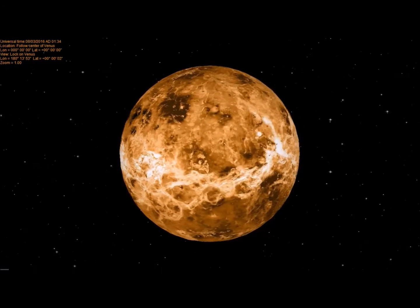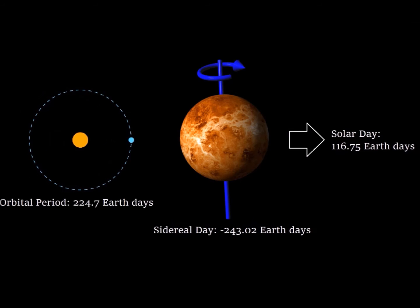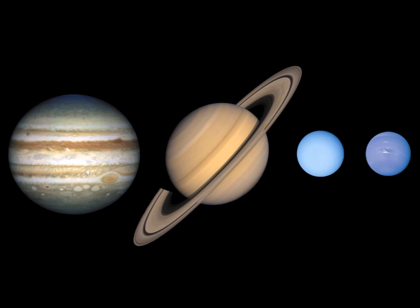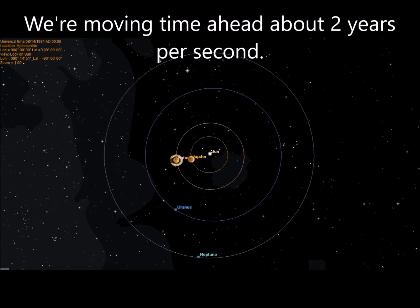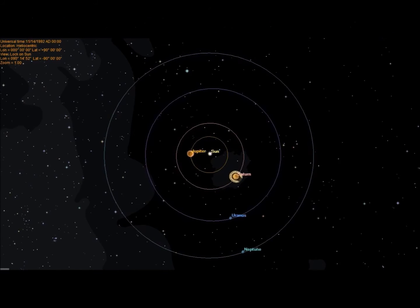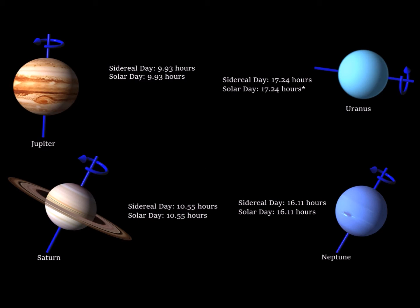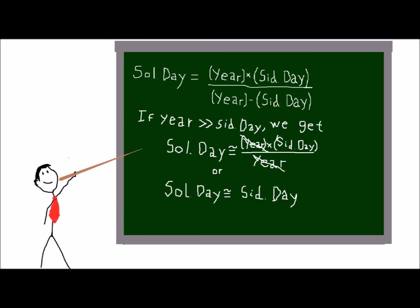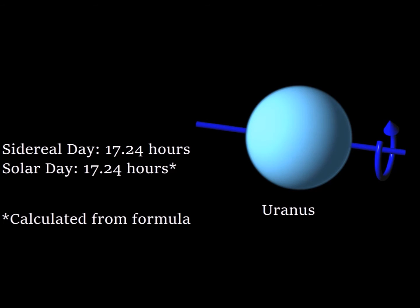If the planet's rotation is retrograde, like Venus, the sidereal day is represented as a negative number. Plugging in the values for each planet's orbital period and rotation rate, we can observe how long a solar day is on each world. The giant planets — Jupiter, Saturn, Uranus, and Neptune — have very fast rotation rates, ranging from 10 to 17 hours long. However, they take quite a long time to orbit the sun; Neptune takes nearly 165 Earth years to complete one orbit. Because of this, there isn't much of a difference between their solar and sidereal days. With a long orbital period and a short sidereal day, you can pretty much say that the solar days for these planets are equal to their sidereal days, except in the case of Uranus, which I will get to.